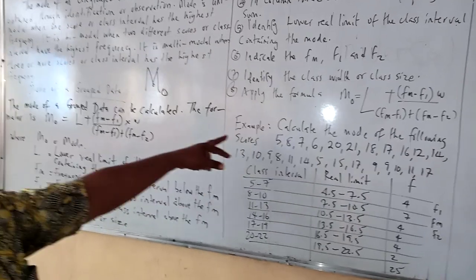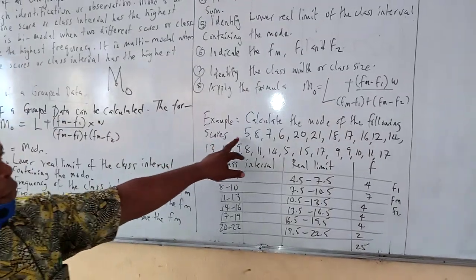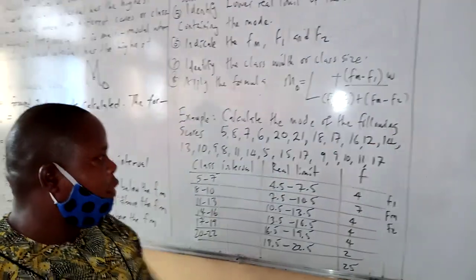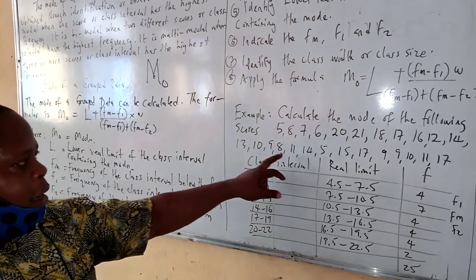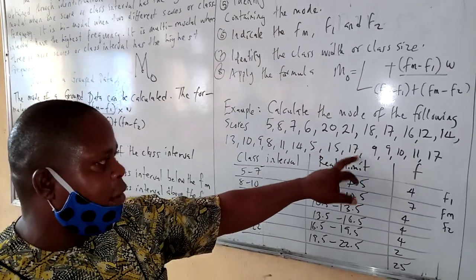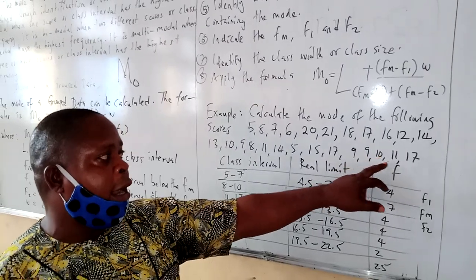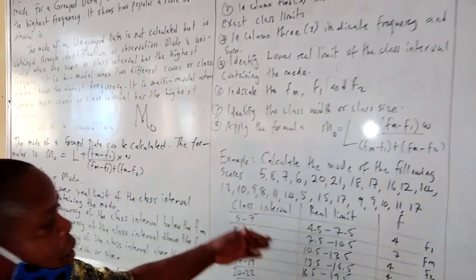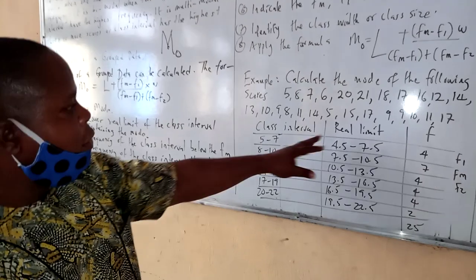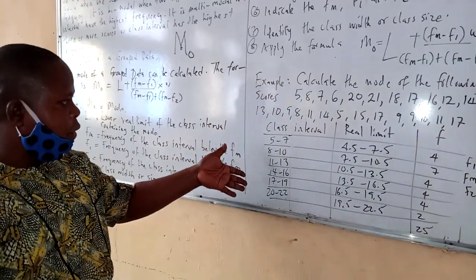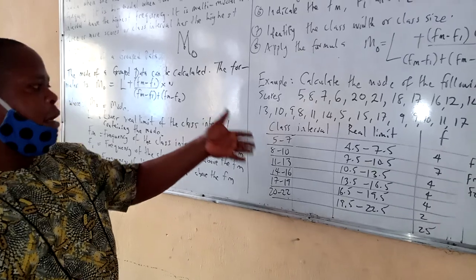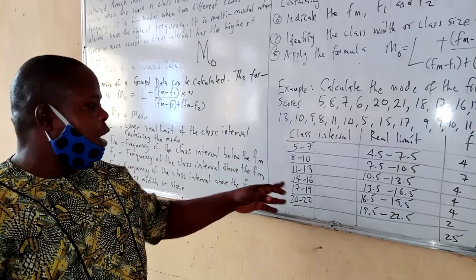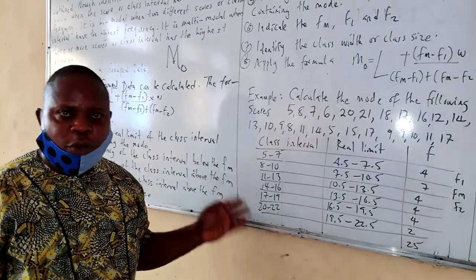Now here's an example. Calculate the mode of the following scores: 5, 8, 7, 6, 20, 21, 18, 17, 16, 12, 14, 13, 10, 9, 8, 11, 14, 5, 15, 17, 9, 9, 10, 11, and 17. Starting with step one, three columns are formed. In column one, class intervals are arranged: 5–7, 8–10, 11–13, 14–16, 17–19, and 20–22.